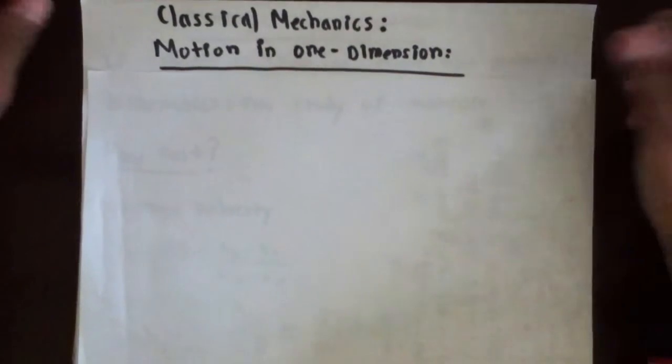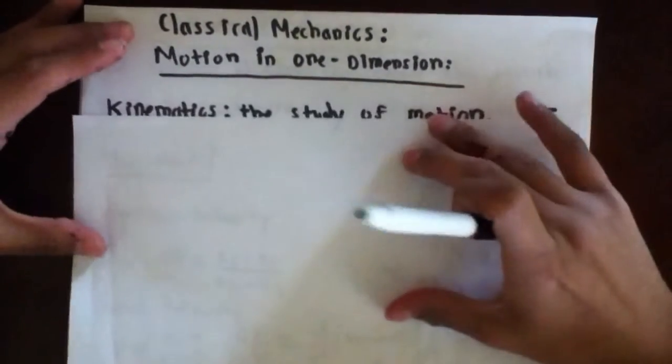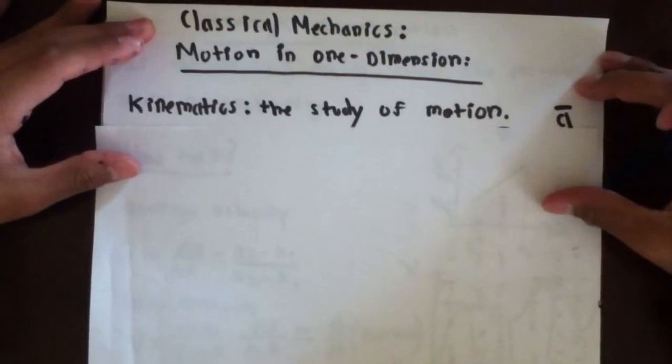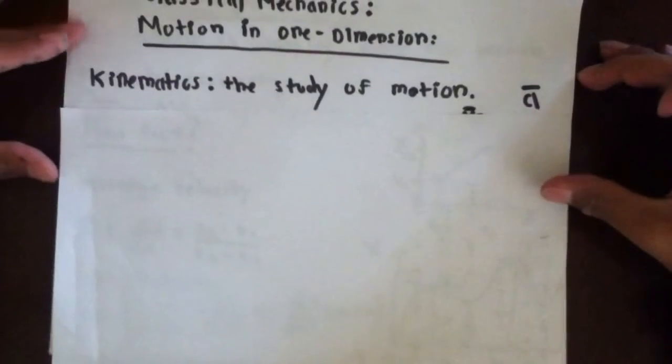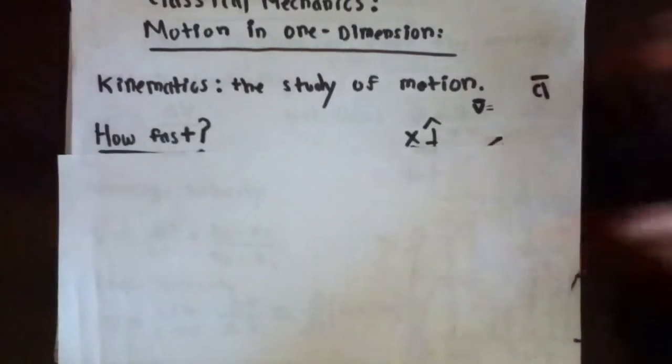So when we're dealing with motion in one dimension, we want to study kinematics, and kinematics is a study of motion. And usually when you're dealing with kinematics, the natural question you might have is how fast something is going, right?